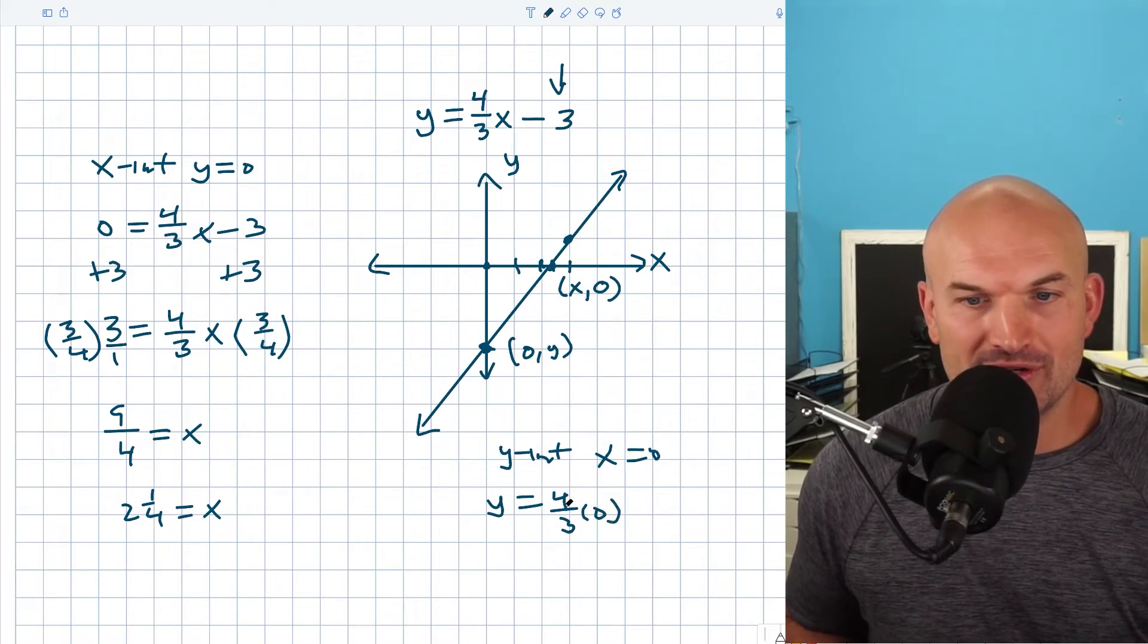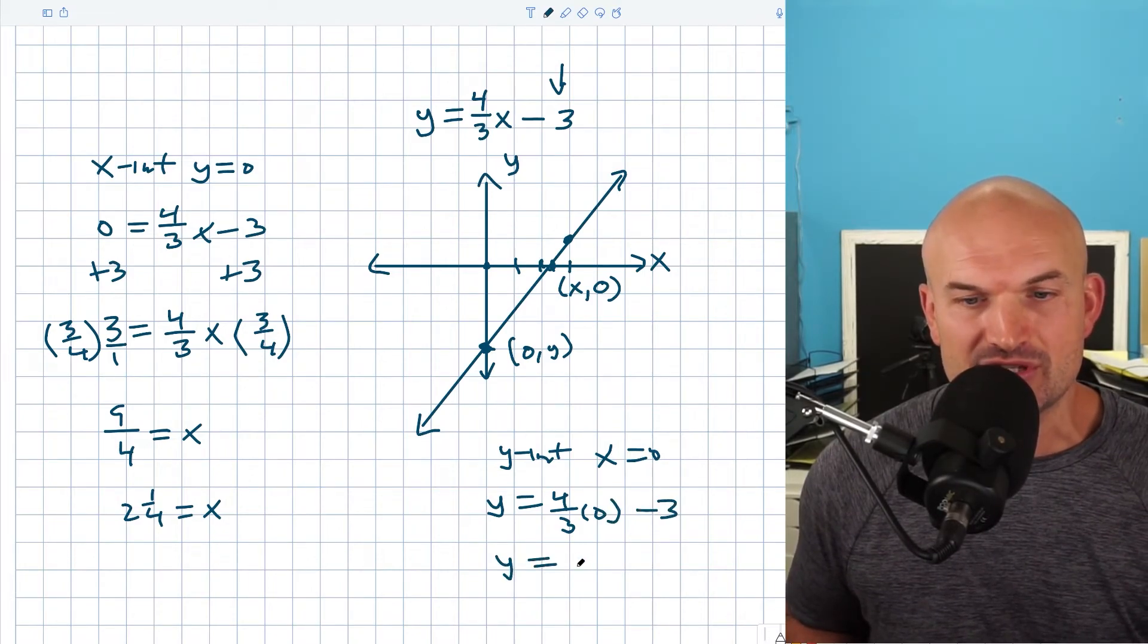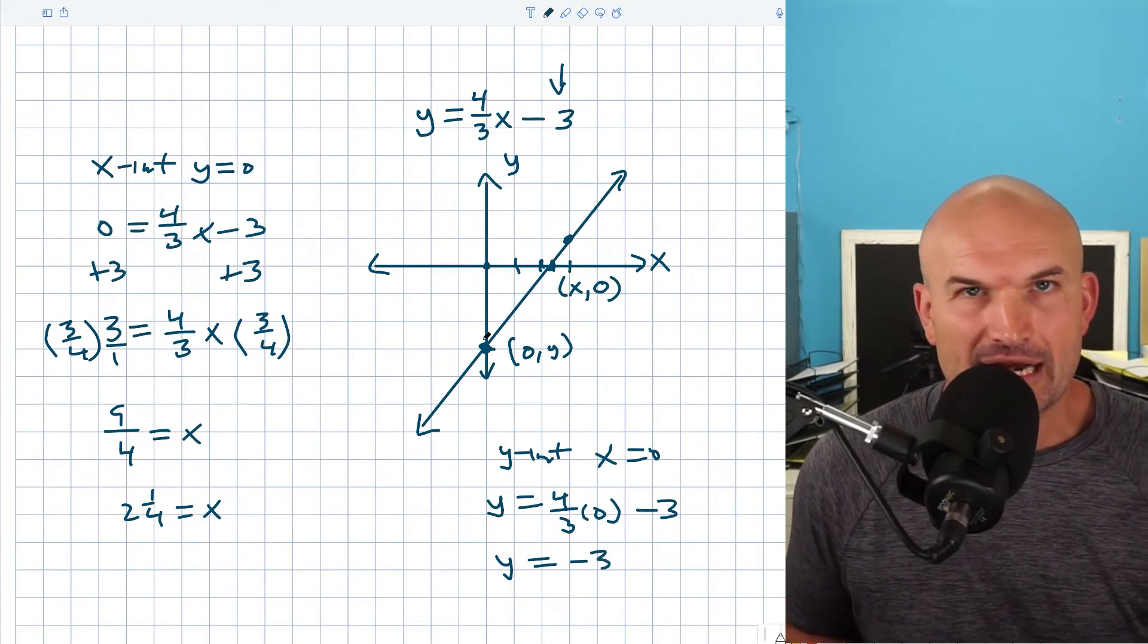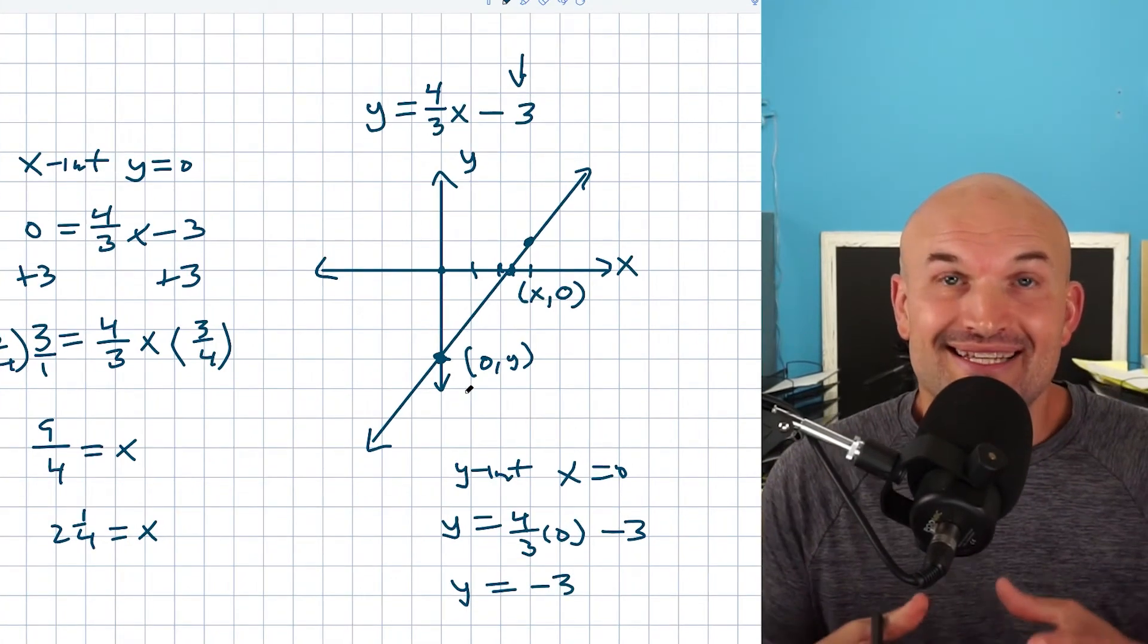So look what happens when I put a zero in for the x, like it's pretty simple, right? Four thirds times zero is just going to be zero. So I have y equals zero minus three, which is just going to be negative three again, which we already knew.